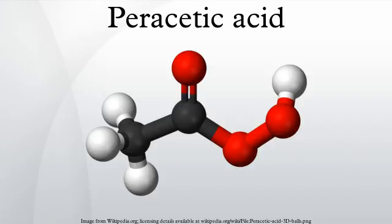Parasitic acid is produced industrially by the auto-oxidation of acetaldehyde: O2 plus CH3CHO gives CH3CO3H. It also forms upon treatment of acetic acid with hydrogen peroxide, with the equilibrium constant dependent on the concentrations and conditions of reaction: H2O2 plus CH3CO2H gives CH3CO3H plus H2O. As an alternative, acetyl chloride and acetic anhydride can be used to generate a solution of the acid with lower water content.